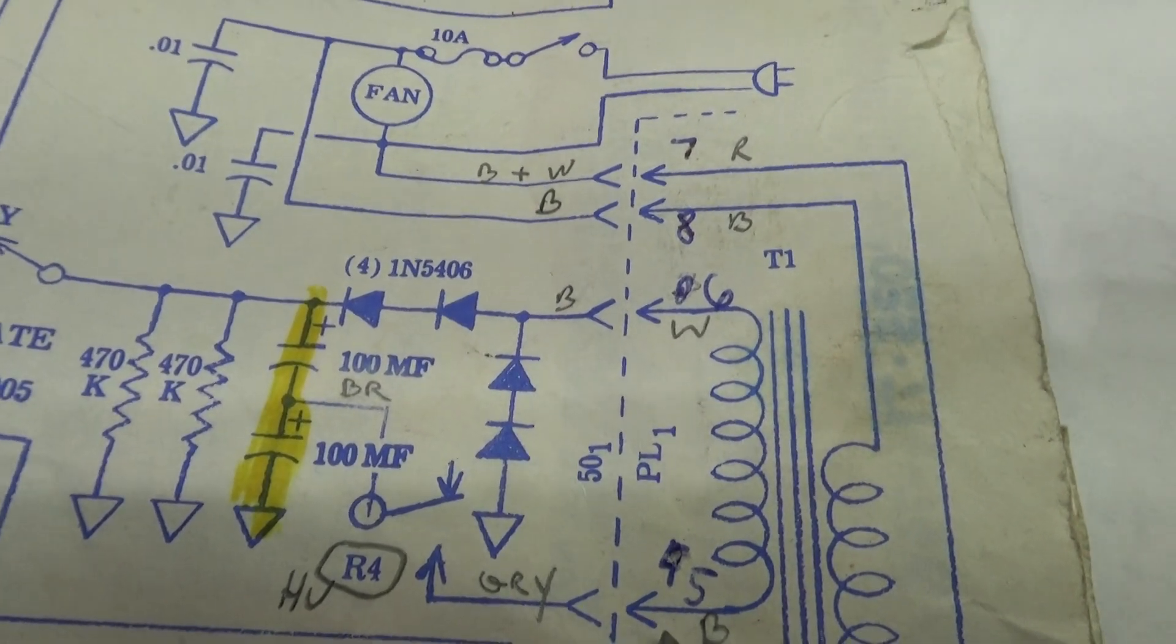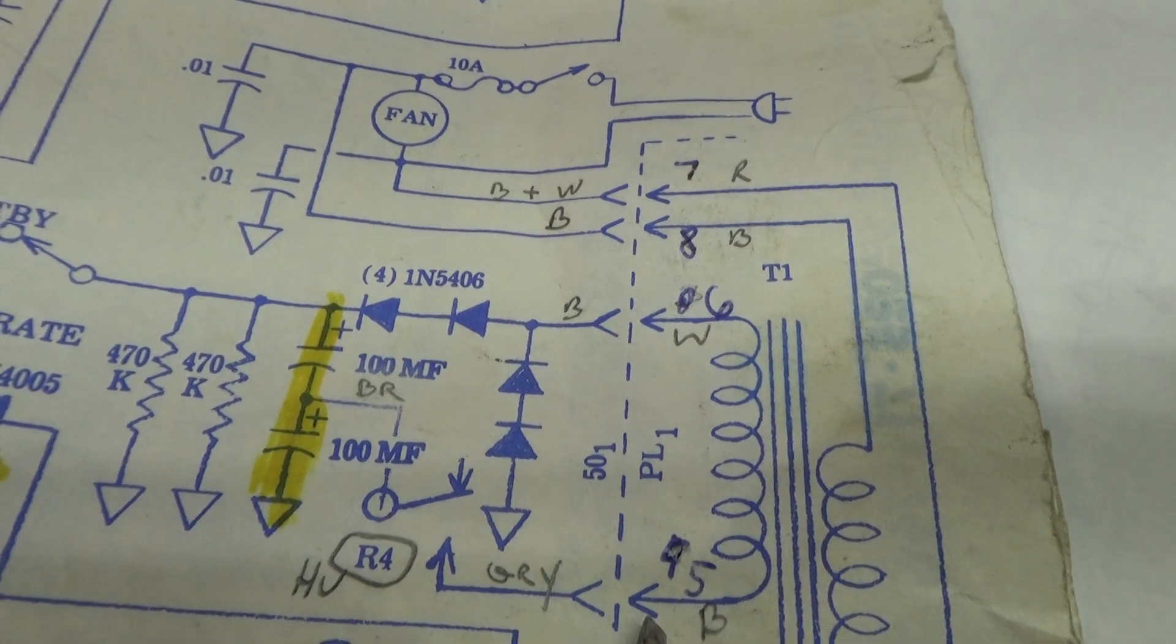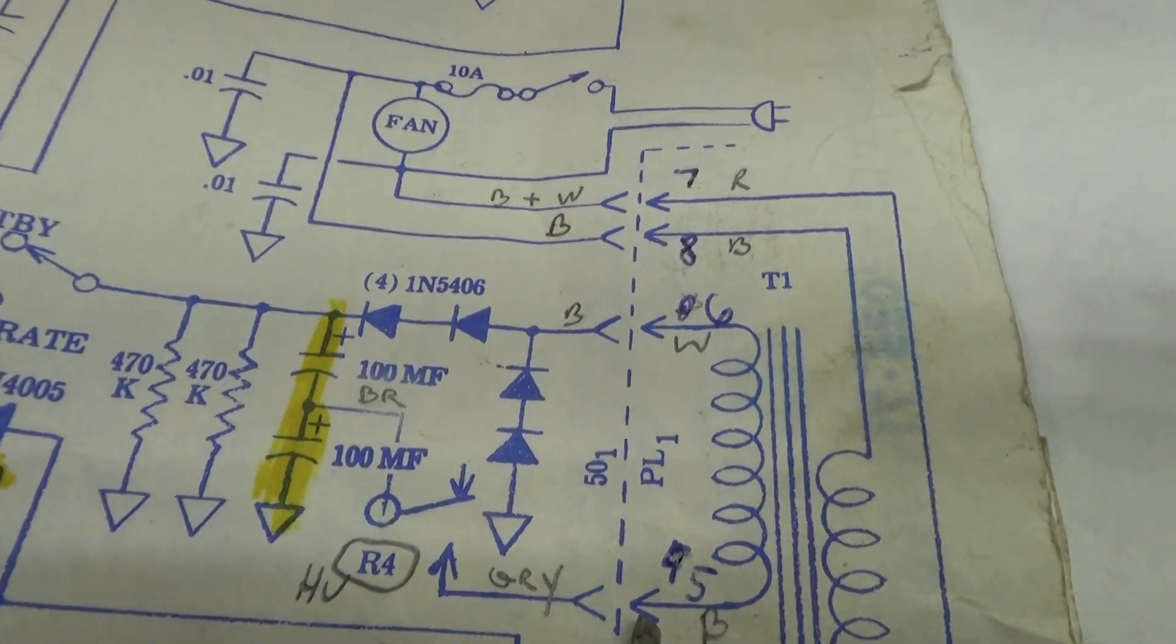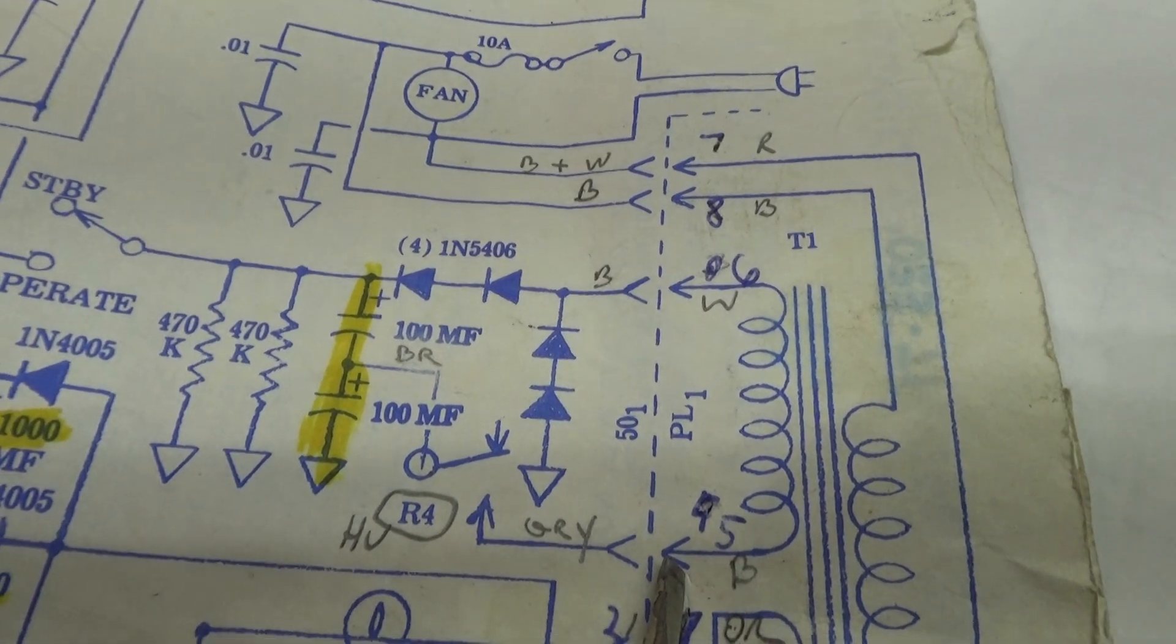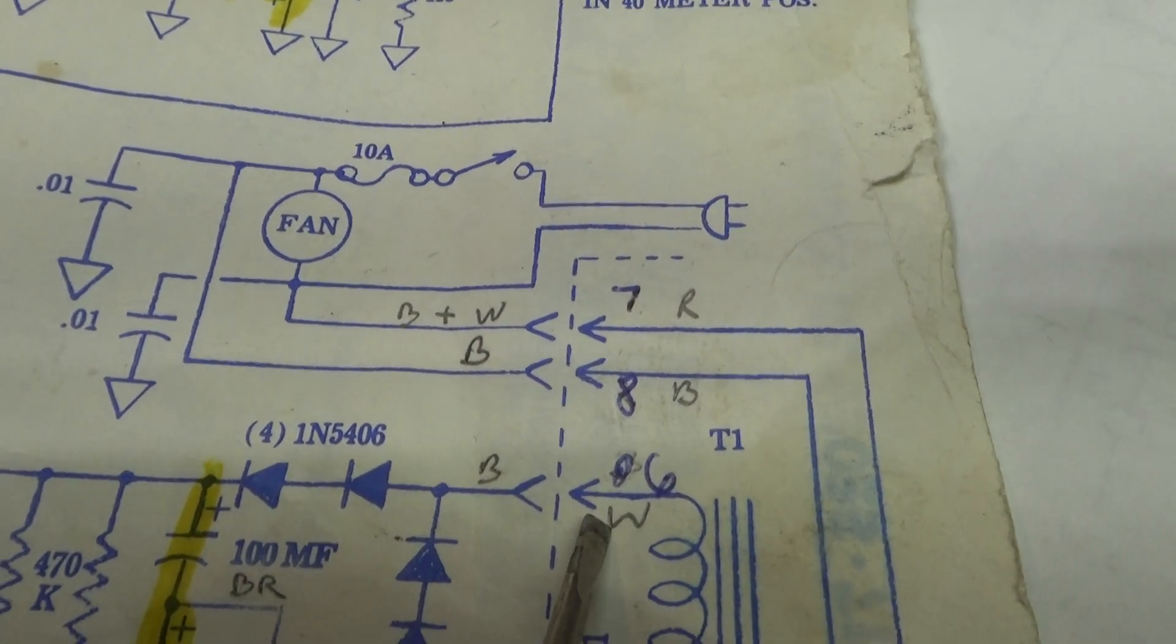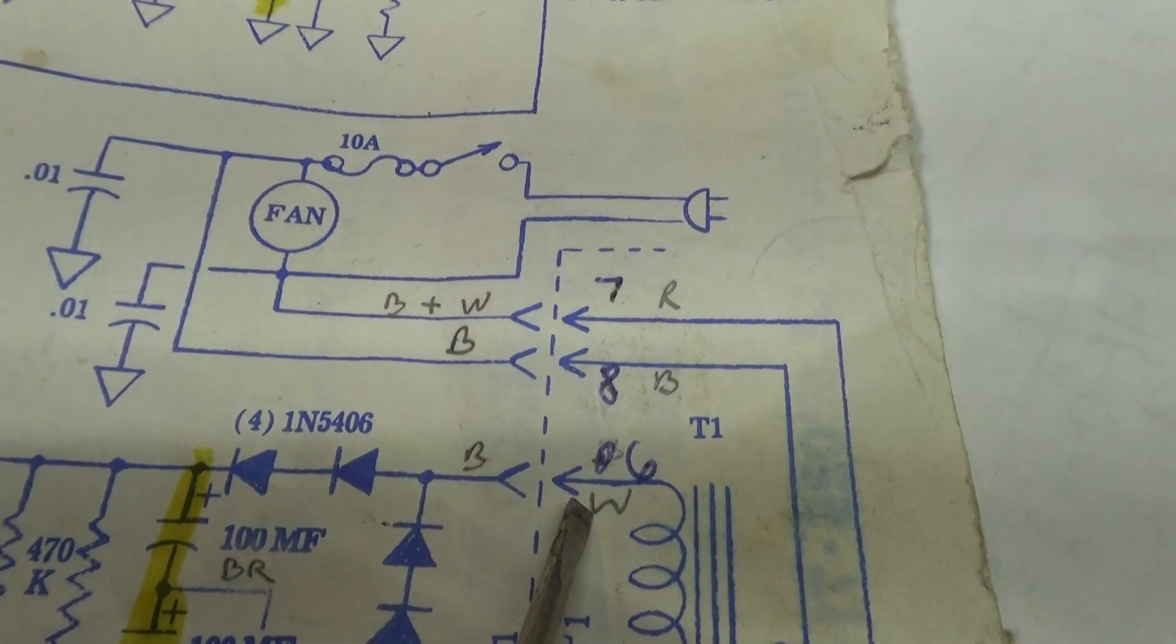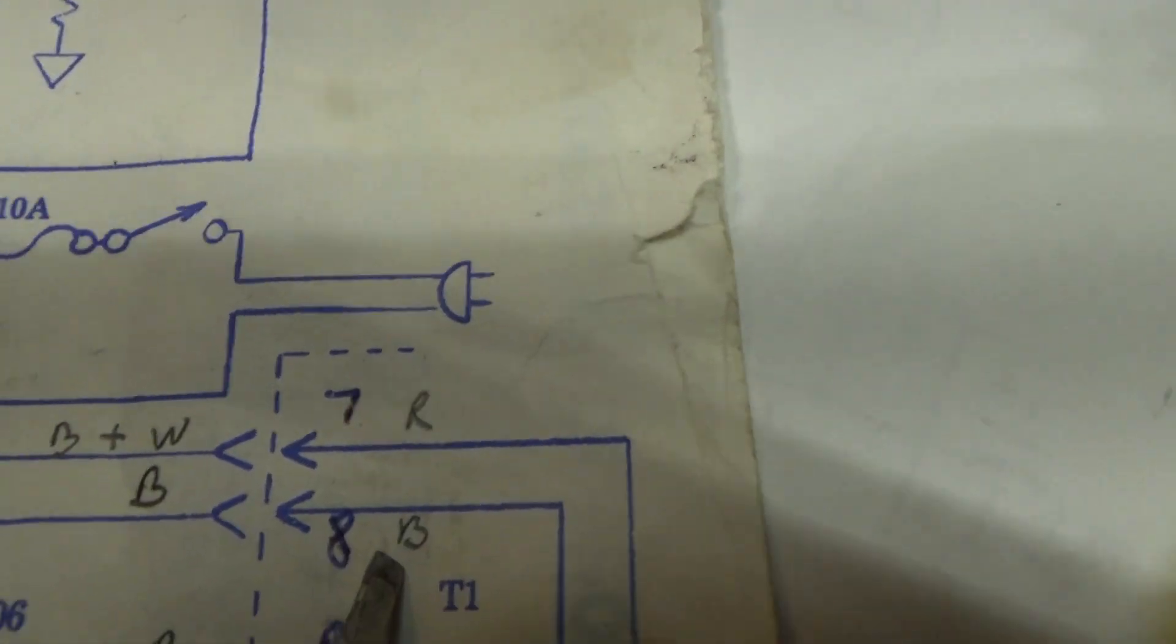Going up to pin five, that's the high voltage, one leg of the high voltage from the transformer going over to the voltage doubler.